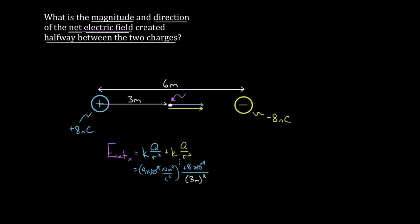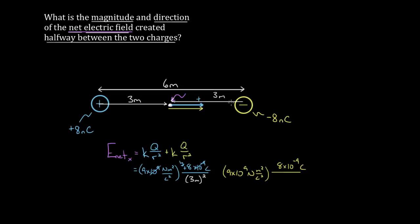Don't forget to square the distance. Now, just because a charge is positive doesn't mean its contribution to the field is automatically positive — you have to check the direction. The positive charge creates a field pointing to the right, which is the positive direction, so that term is positive. For the yellow charge of negative eight nanocoulombs, plug in the magnitude (eight nanocoulombs) and determine the sign from the direction. Since that field also points to the right, this contribution is also positive. Both terms add up.